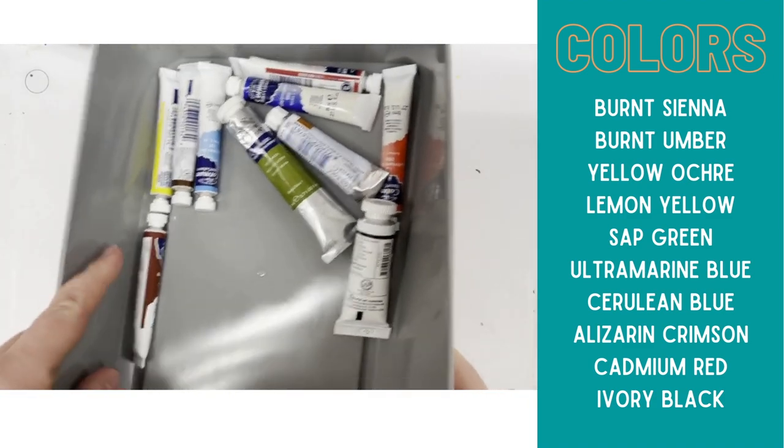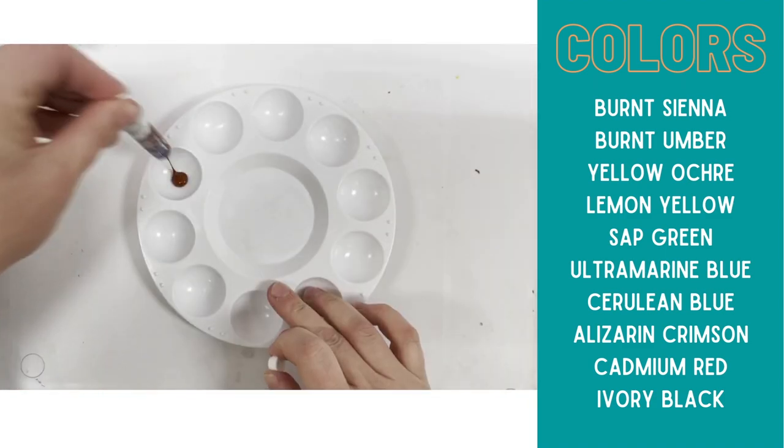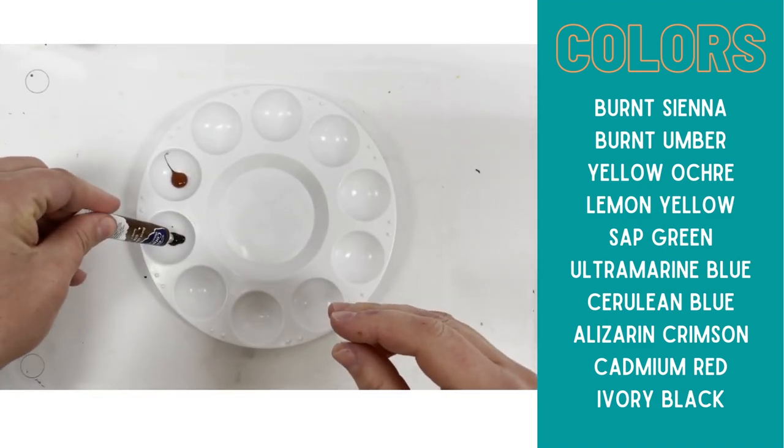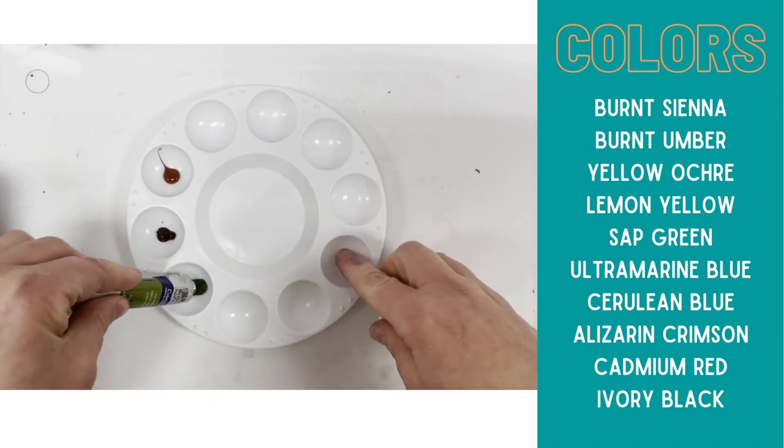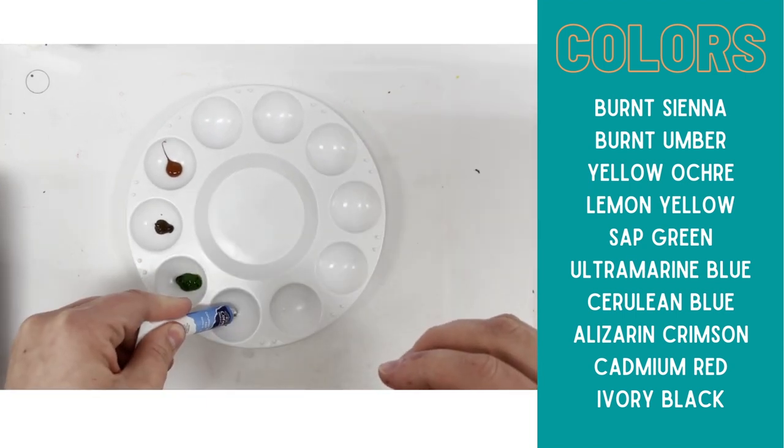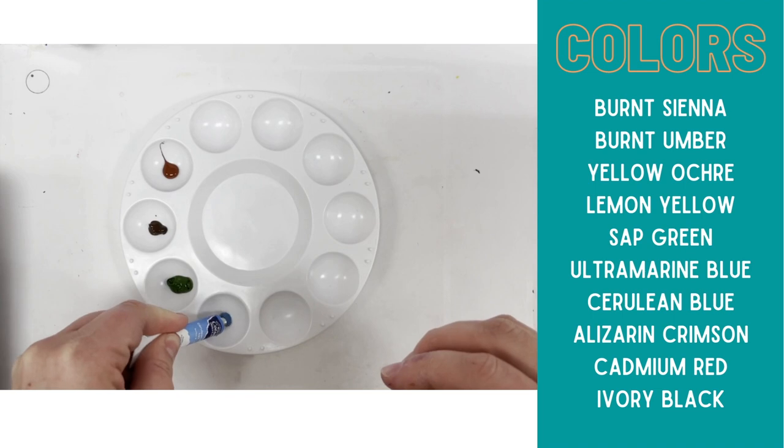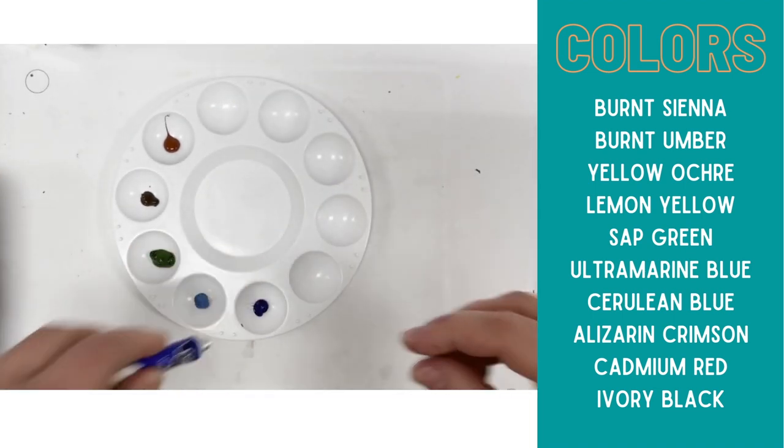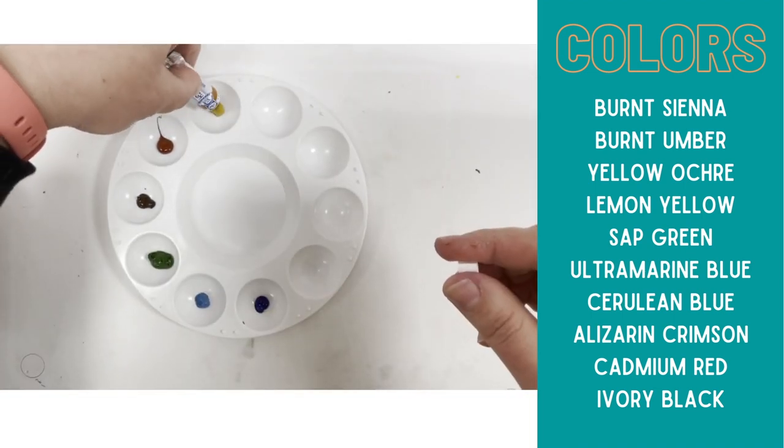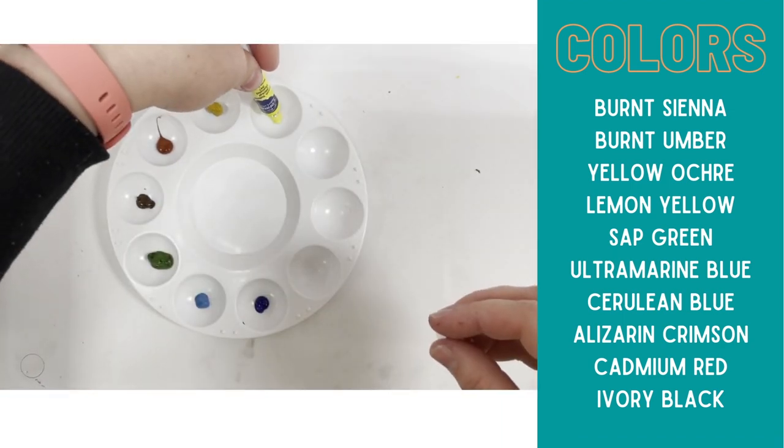There are 10 colors in tubes. You are going to apply a little dot of each color. It really doesn't matter what order you choose to put the colors in, but it's nice to at least know which color is which.